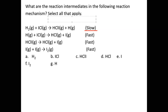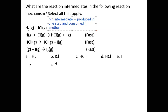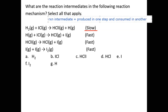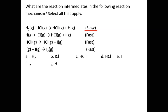A reaction intermediate is produced in one step and consumed in another. So we look at the first step: we produce HCl·I and H. In the second step we use H. So H is produced in the first step and consumed in the second step — H is a reaction intermediate.